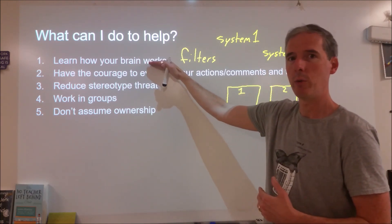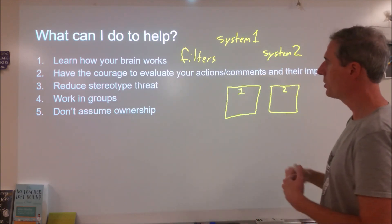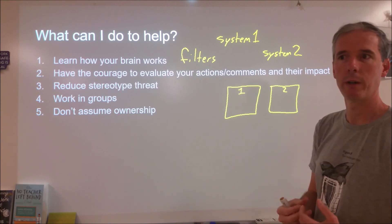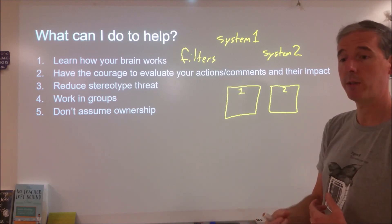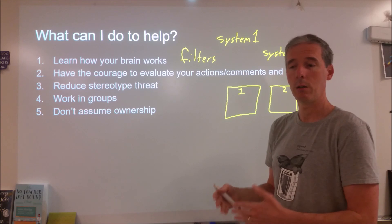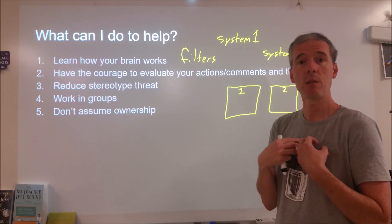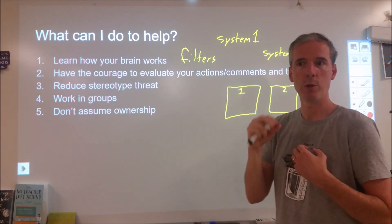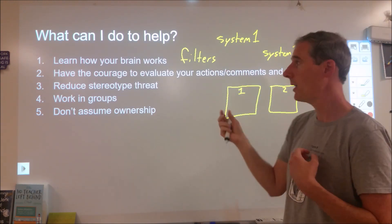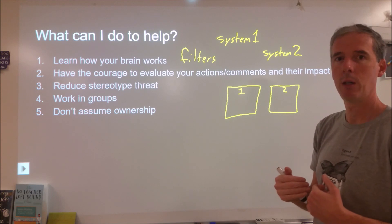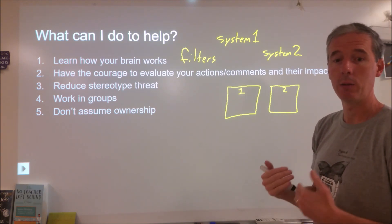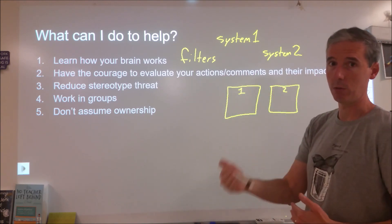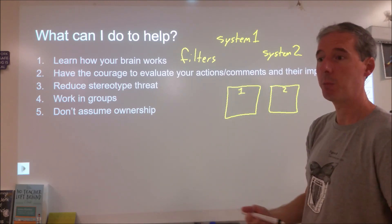You need to learn how your brain works so you understand that. The second piece is having the courage to evaluate your actions, comments, and their impact — and be able to say 'I was wrong.' If someone tells you that you just did something racist, pause and listen and ask, was it? It's very easy to get defensive and move into the amygdala, where you get defensive and emotional. Instead, just pause and think: was I doing that? Was I being harmful? That's really important to having better relationships and making people feel more included.